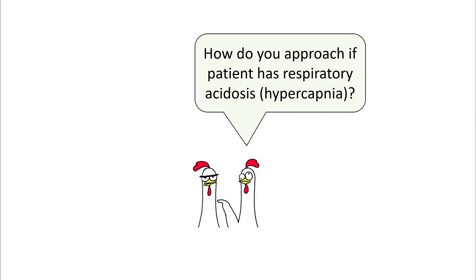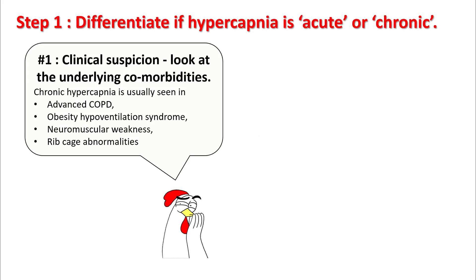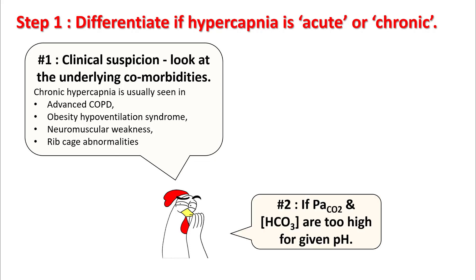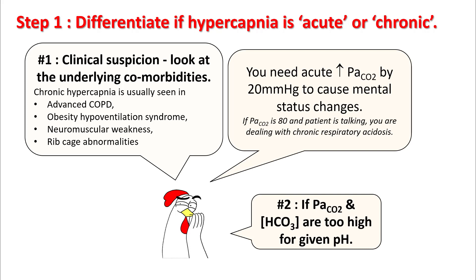So let's see how we approach a patient with respiratory acidosis. First step is to differentiate if the hypercapnia or elevated CO2 is acute or chronic — here you have to look at the comorbidities. Your clinical suspicion is very important: look for signs of advanced COPD, hypoventilation syndrome, neuromuscular weakness, rib cage abnormalities, etc. If your ABG shows PaCO2 and bicarb are too high for a given pH, you're possibly looking at a patient with chronic compensation. Hypercapnia causes mental status changes — you need at least a PaCO2 rise of 20 mmHg acutely to cause any mental status changes. So if your PaCO2 is 80 and the patient is talking to you, you're possibly dealing with chronic respiratory acidosis and not an acute one.